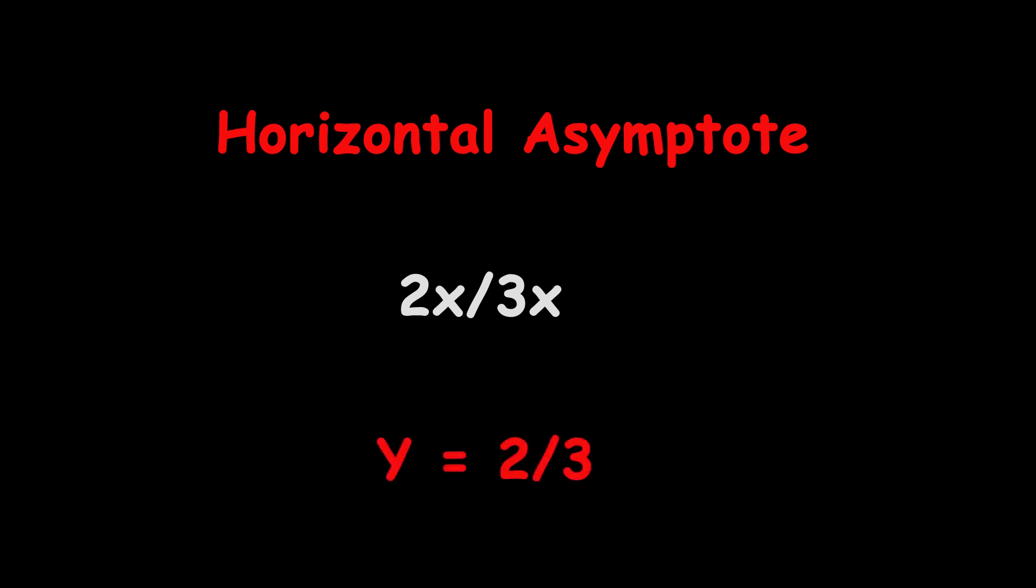Whereas the vertical asymptote will be 1/3, as the denominator 3x - 1, when equated to 0, gives us x = 1/3.